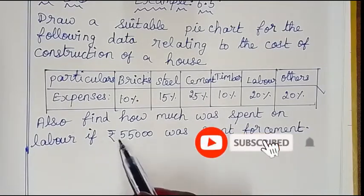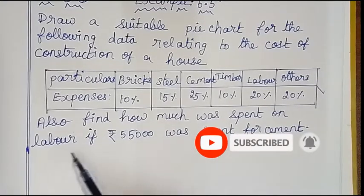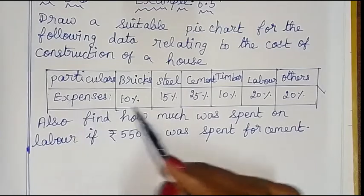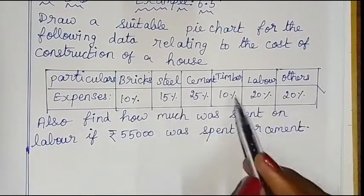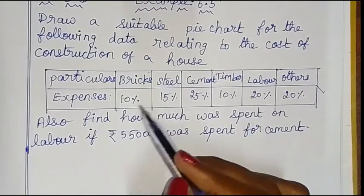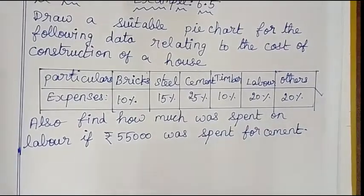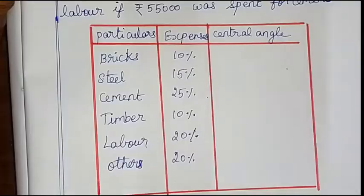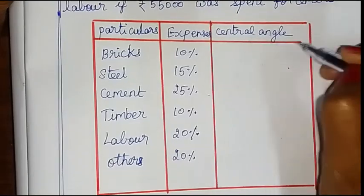If 55,000 was spent for cement — so if 55,000 was spent for labor — the expenses will be percentage-wise. First, we can see the pie chart. First, the tabular column. If you have a circle graph, you can set a central angle.